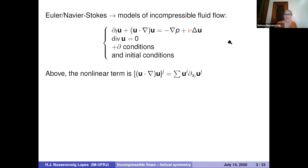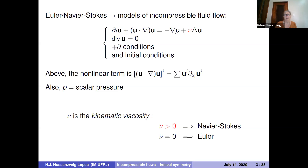P is a scalar pressure and nu is a parameter — the kinematic viscosity, or one over the Reynolds number. If nu is positive, these are the Navier-Stokes equations; if nu is zero, these are the Euler equations.